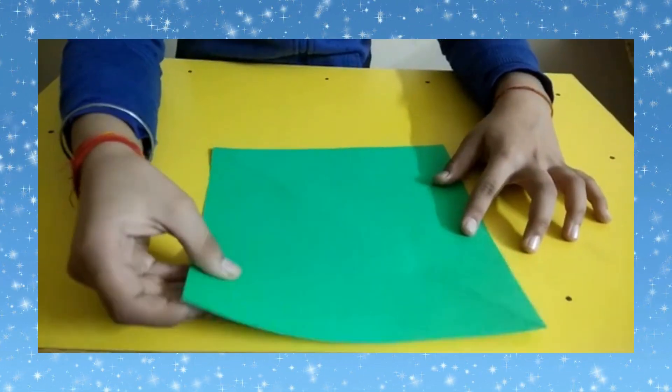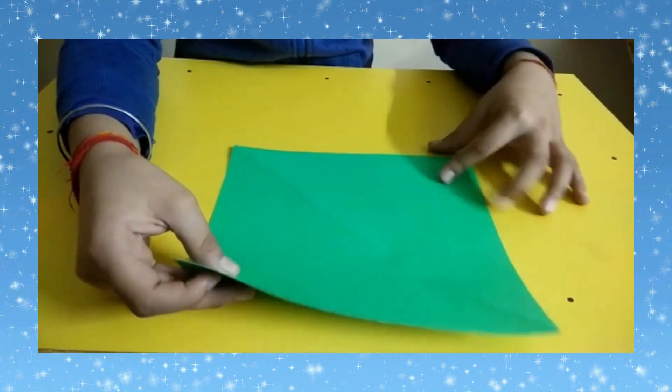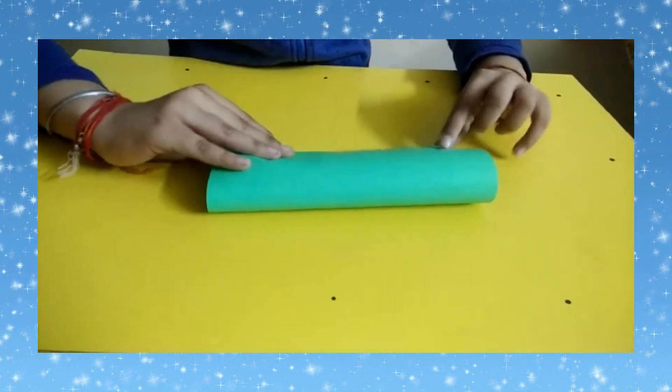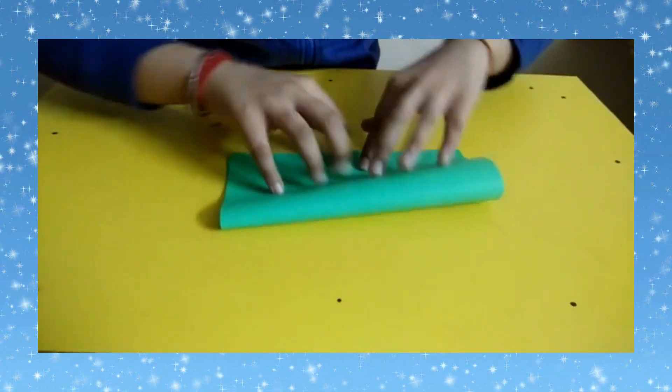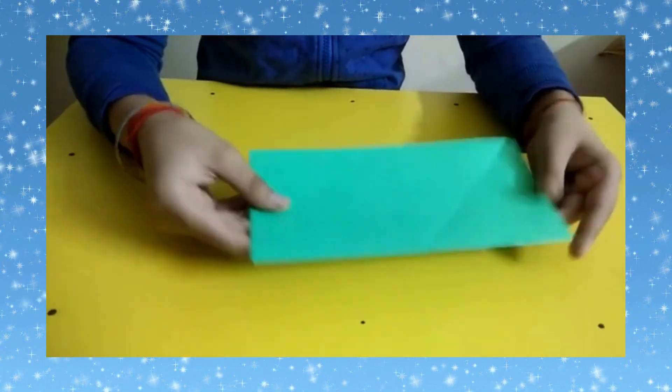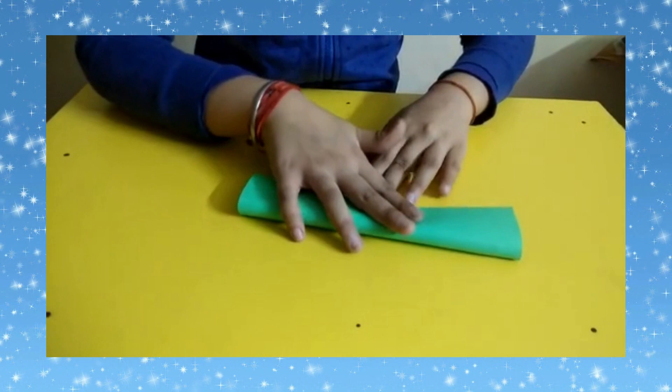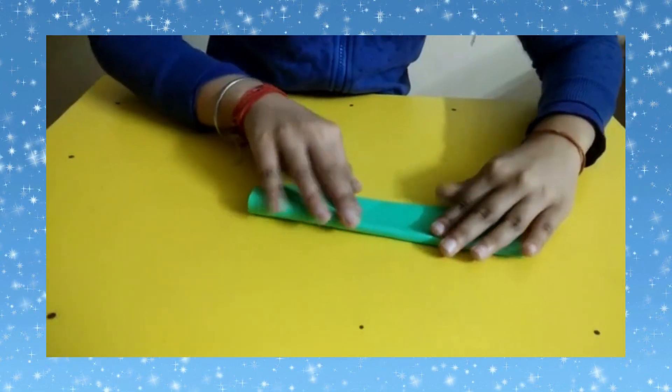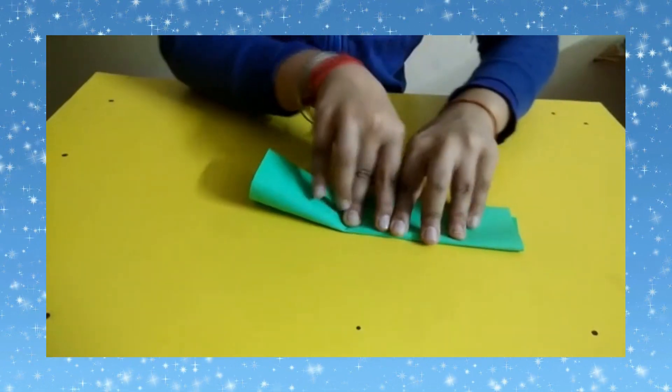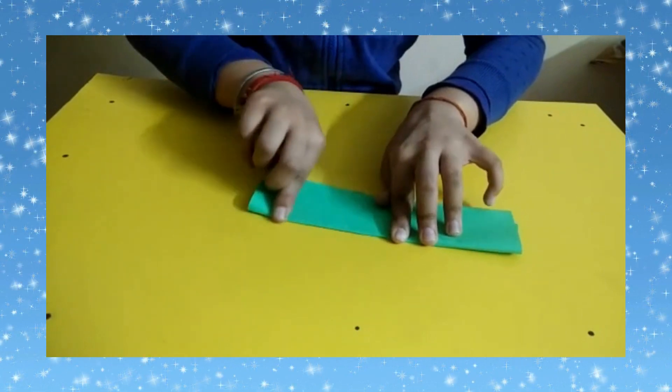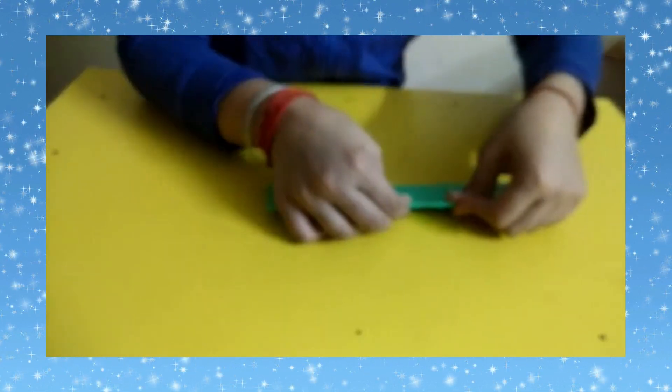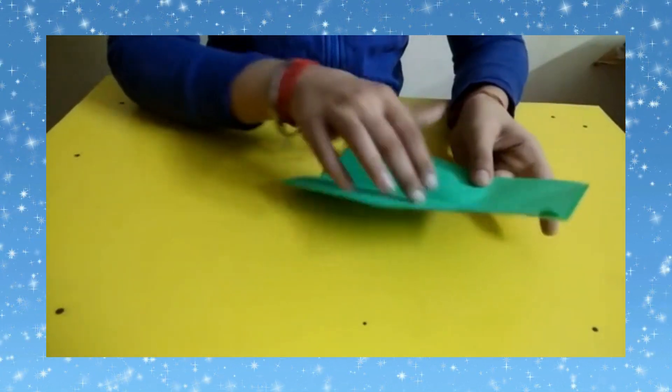Now we will fold this square sheet into half. Then again we need to fold it into half. Then open it.